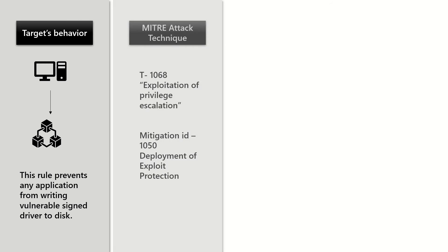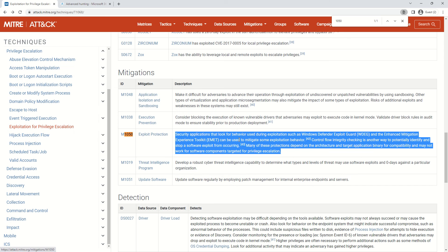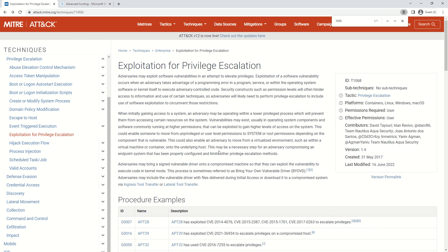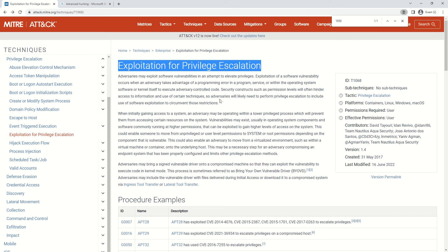The attack technique which this rule targets is exploitation of privilege escalation, and the mitigation ID is 1050, which basically lists down a method of deploying exploit protection. I'll show you the official documentation — it will be in the description section. Exploitation of privilege escalation is something that's been targeted by this particular rule.